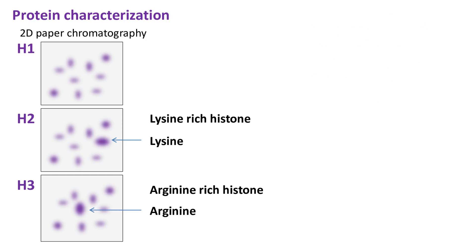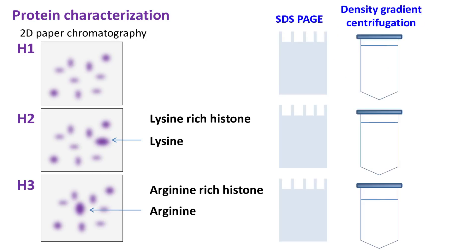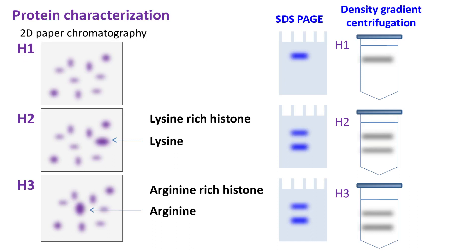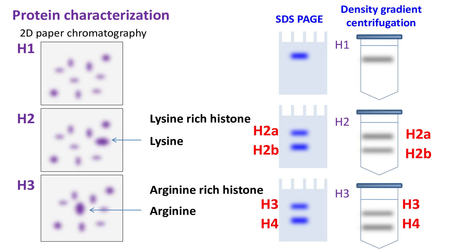Further analysis of these proteins was done by SDS-PAGE and density gradient centrifugation. The analysis revealed that there are two types of lysine-rich histones, hence they were called H2A and H2B. The analysis also showed that there were two types of arginine-rich histones, hence they were called H3 and H4.